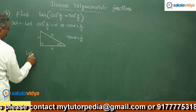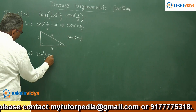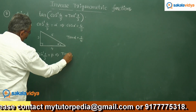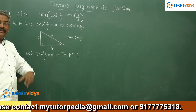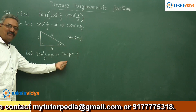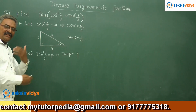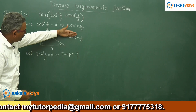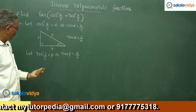Now let tan inverse 2 by 3 equals to beta, so tan beta is equal to 2 by 3. One question might arise: do we need to find out other values? No, it does not require. Because we need only tan beta, we directly got it. We do not need to find out other trigonometric ratios. Now we know tan alpha and tan beta, so tan of alpha plus beta we can easily find out.